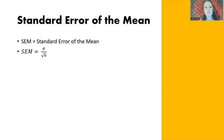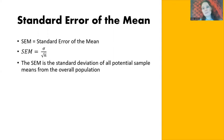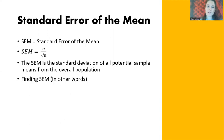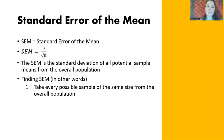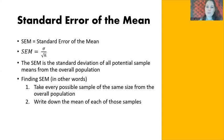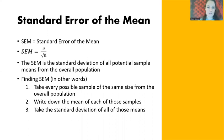The formula for SEM is the population standard deviation divided by the square root of our sample size. The SEM is the standard deviation of all potential sample means from the overall population. In other words, if you were to do this the long way, you could take every possible sample of the same size from the overall population, write down the mean of each, and then find the standard deviation of all those means. That is what the SEM represents.